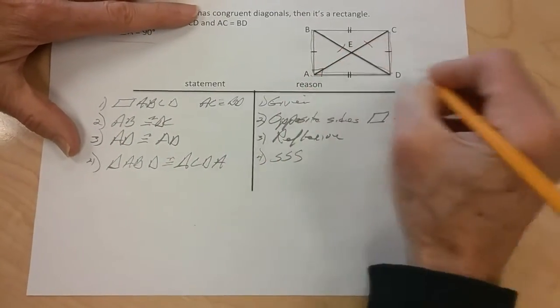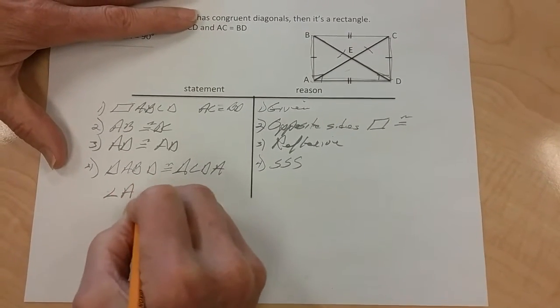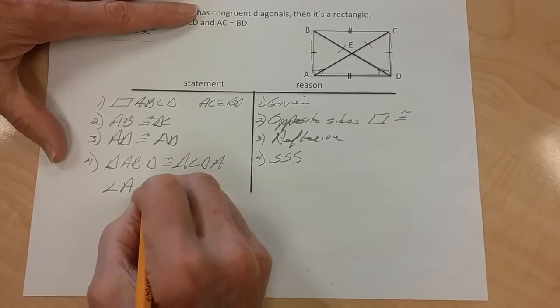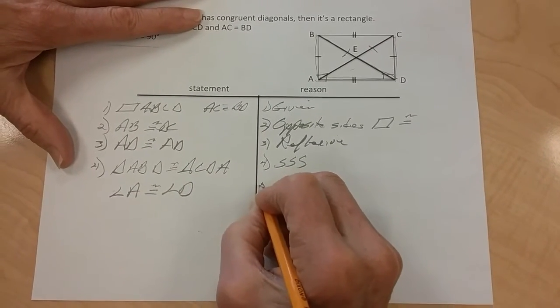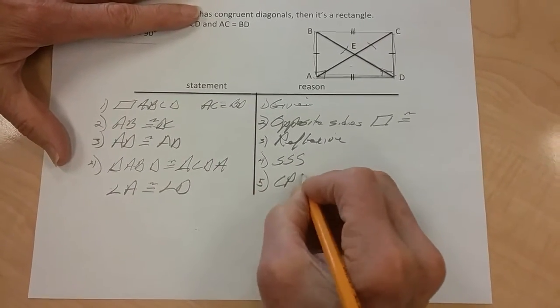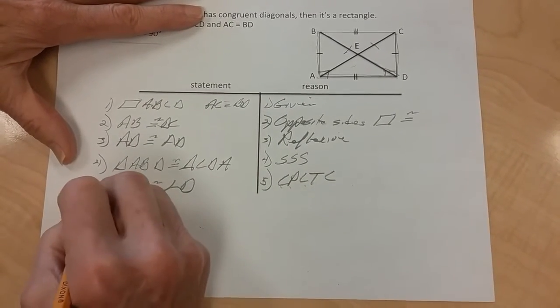Therefore, angle A and angle D are congruent because they are, five, that's CPCTC: corresponding parts of congruent triangles are congruent.